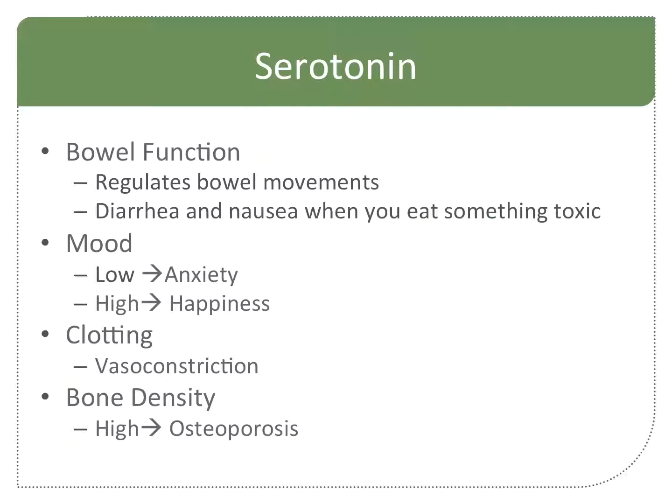What about serotonin? Serotonin also has a function in the gut, and there's actually more dopamine, serotonin, and GABA in the gut than there are in your brain. Serotonin in the gut regulates bowel movements — dopamine gives you the contraction, serotonin tells you how often. You get diarrhea and nausea when you eat something toxic because serotonin is overreacting to the toxic substance. Mood-wise: if serotonin is low, anxiety; if high, happiness. Whereas dopamine is psychological reward, serotonin is just that general feeling of happiness and positivity.